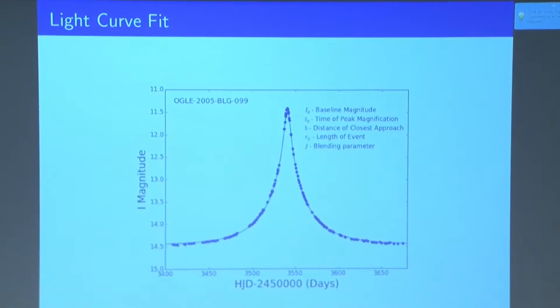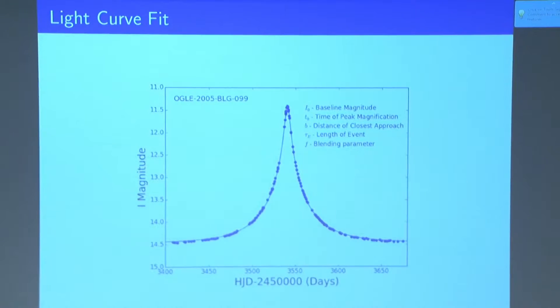And so there are five input parameters, the baseline magnitude, the time of the peak magnification, the distance of closest approach, the length of the event, and also a fifth parameter, F, the blending parameter.